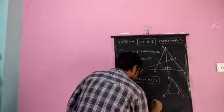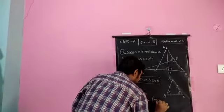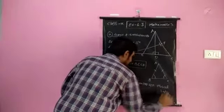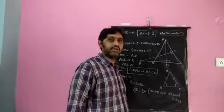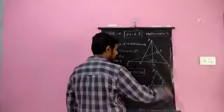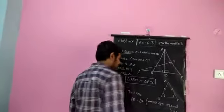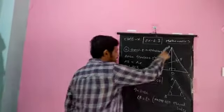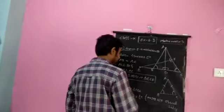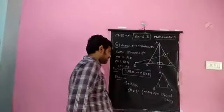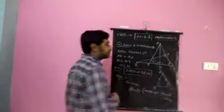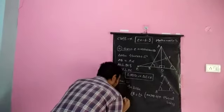The reason we write this is the property: angles opposite to equal sides are equal. In Class 9 you learned that sides opposite to equal angles are equal, and angles opposite to equal sides are equal. So in this figure, angle B equals angle C because ABC is an isosceles triangle. Now we focus on triangle ABD and triangle ECF.